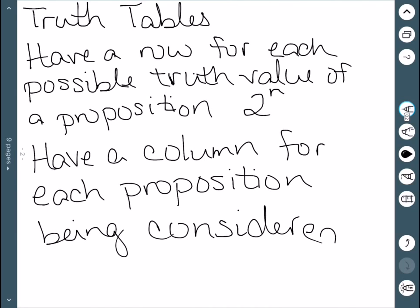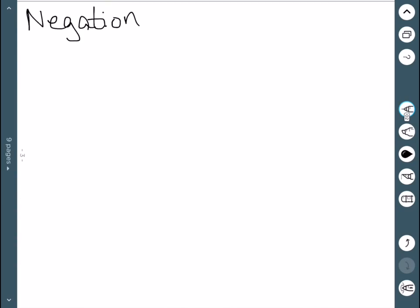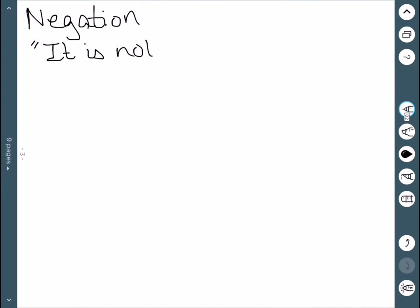So we'll do some very basic truth tables here as I define these logical operators. We'll start with the negation. By negation we mean it is not the case. So if our original proposition is P, then the negation is denoted like this.